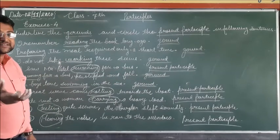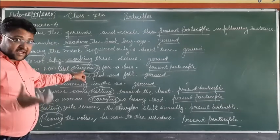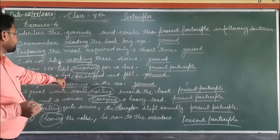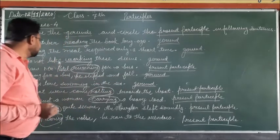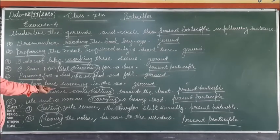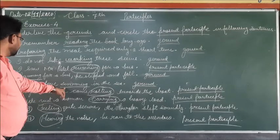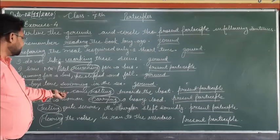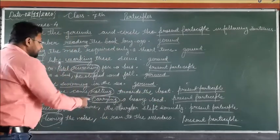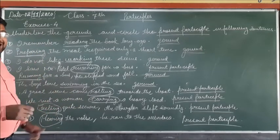Present participles express an unfinished action. 'I saw Mr. Patel running' means Mr. Patel was running — the action was ongoing. Next: 'Running for a bus, he slipped and fell' — here 'running' is a gerund working as a noun. 'The boys love swimming in the sea' — 'swimming' is a gerund. Sentence 7: 'A bright beam came rolling towards the board' — 'rolling' is a present participle showing the action is unfinished.